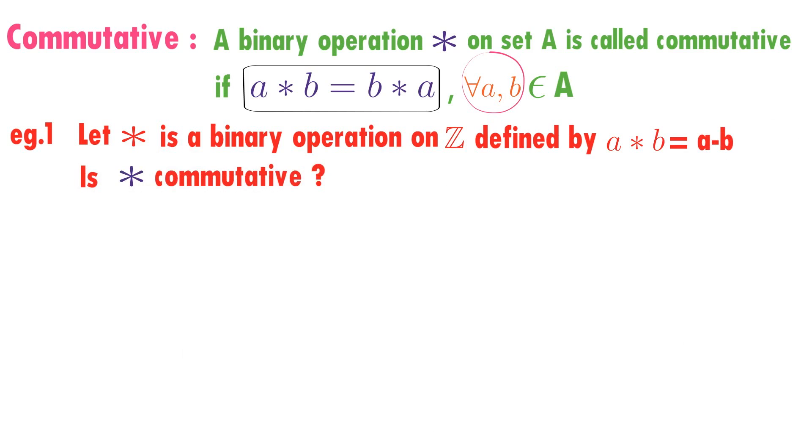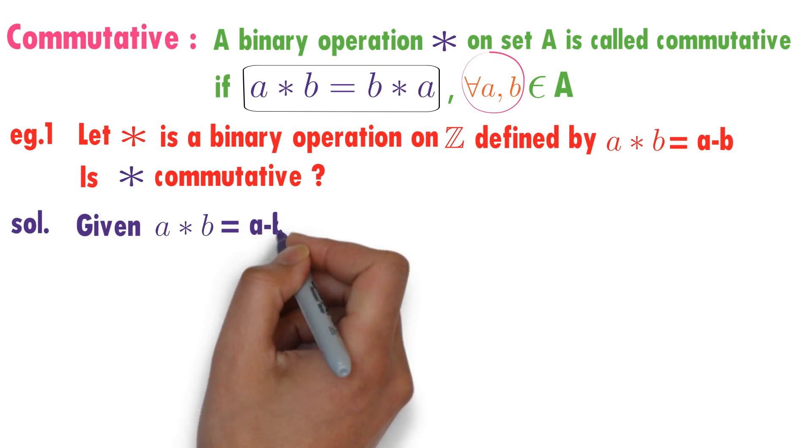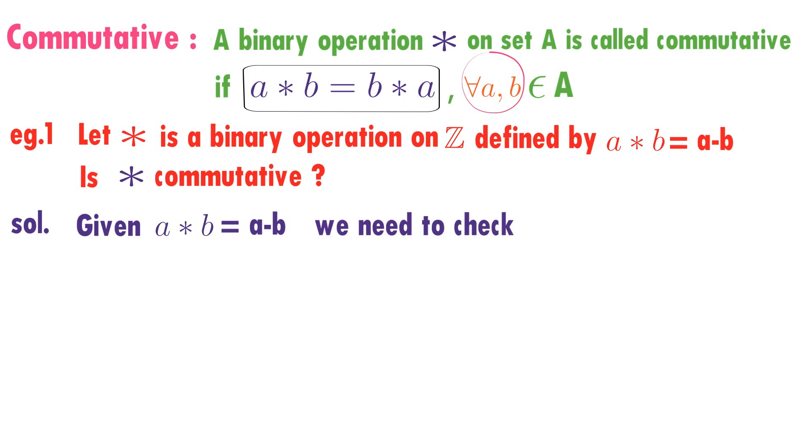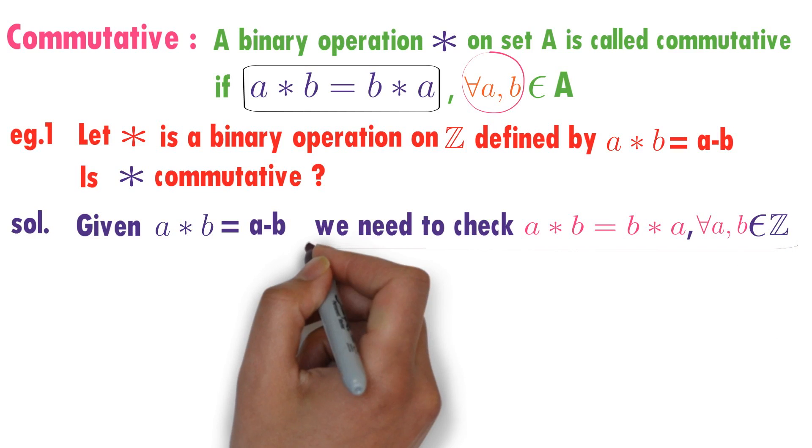Now, we need to check if star is commutative on the set or not. What did they give? They gave A star B equals A minus B. We need to check if star is commutative. When A star B equals B star A for every A, B belongs to Z, then star is called commutative.